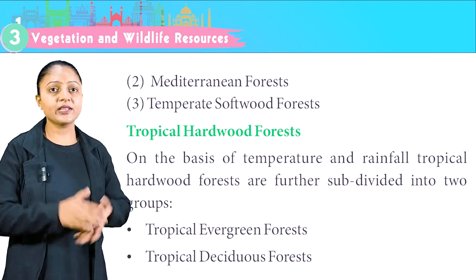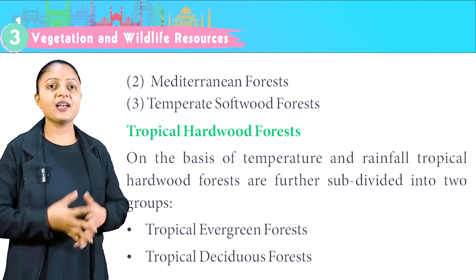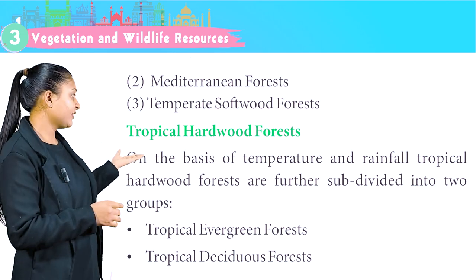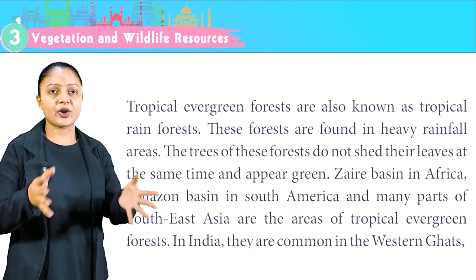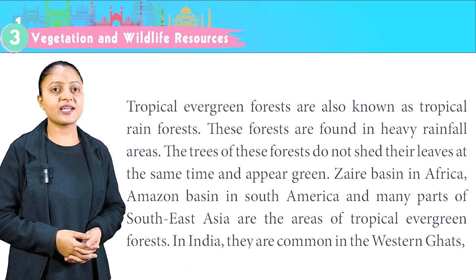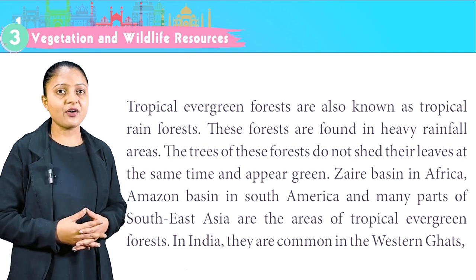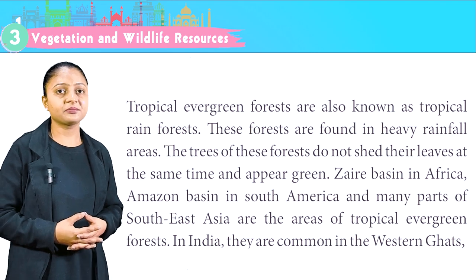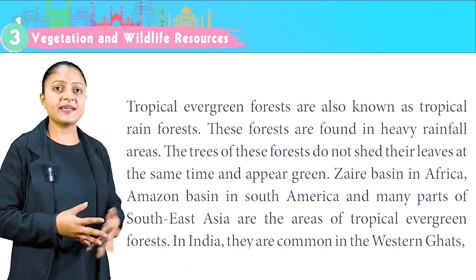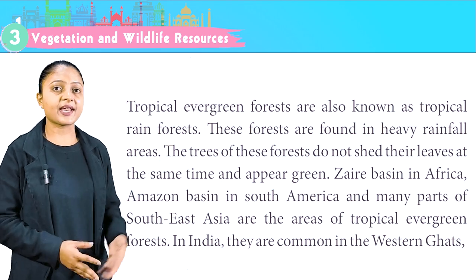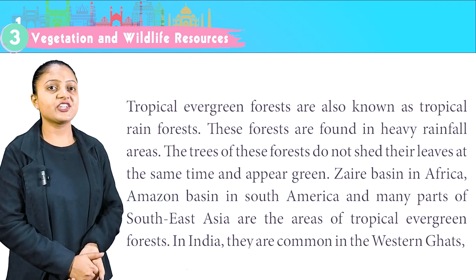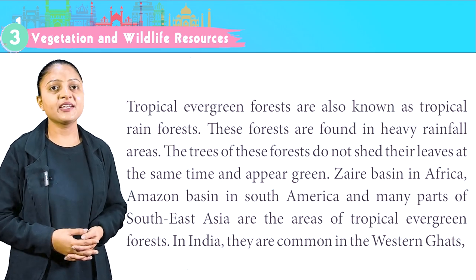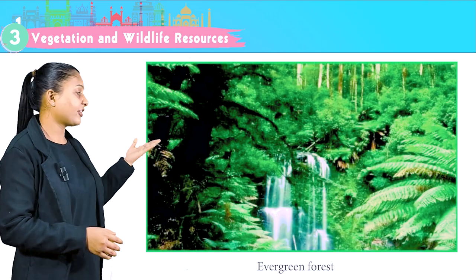Tropical hardwood forests are further subdivided, on the basis of temperature and rainfall, into two groups: tropical evergreen forest and tropical deciduous forest. Tropical evergreen forests are also known as tropical rainforests. These forests are found in heavy rainfall areas. The trees do not shed their leaves at the same time and appear green. Zaire Basin in Africa, Amazon Basin in South America, and many parts of Southeast Asia are the areas of tropical evergreen forests. In India, they are common in the Western Ghats.